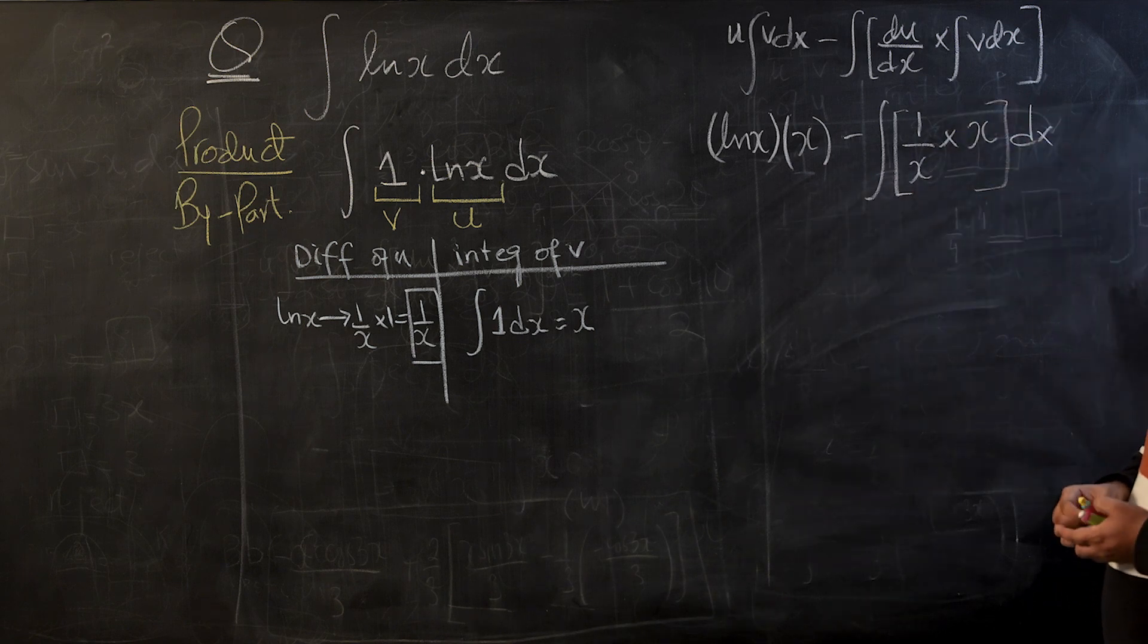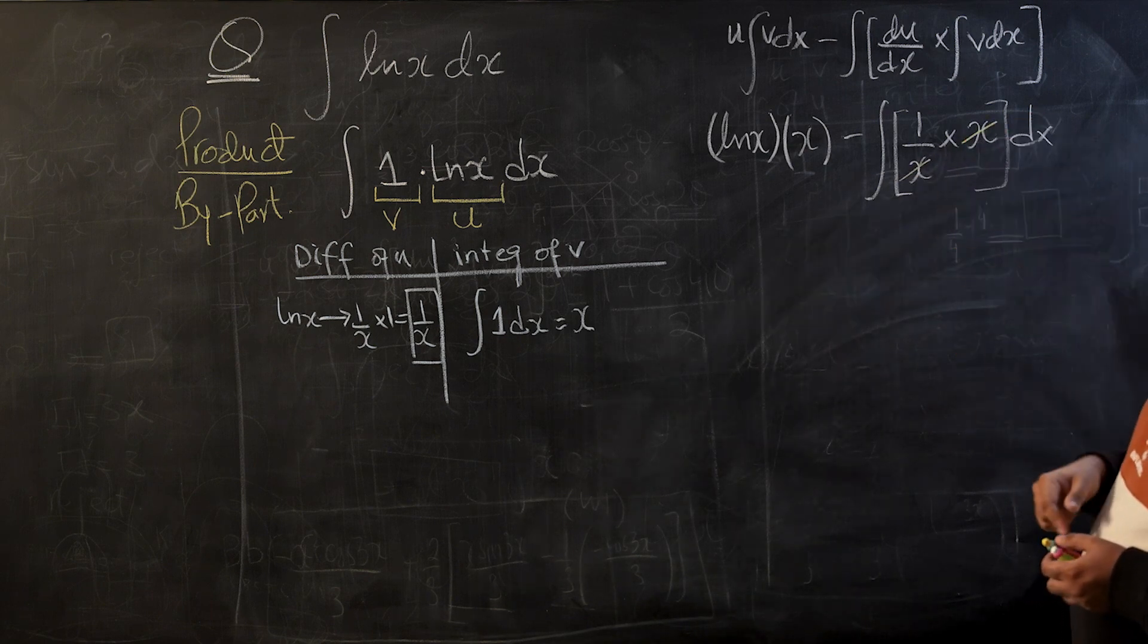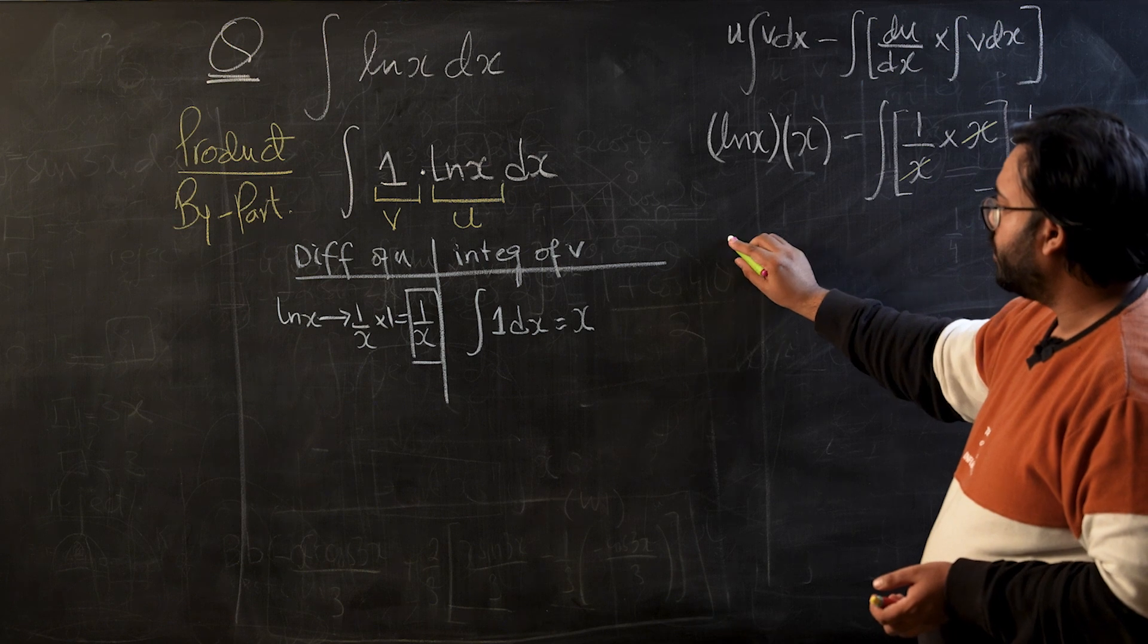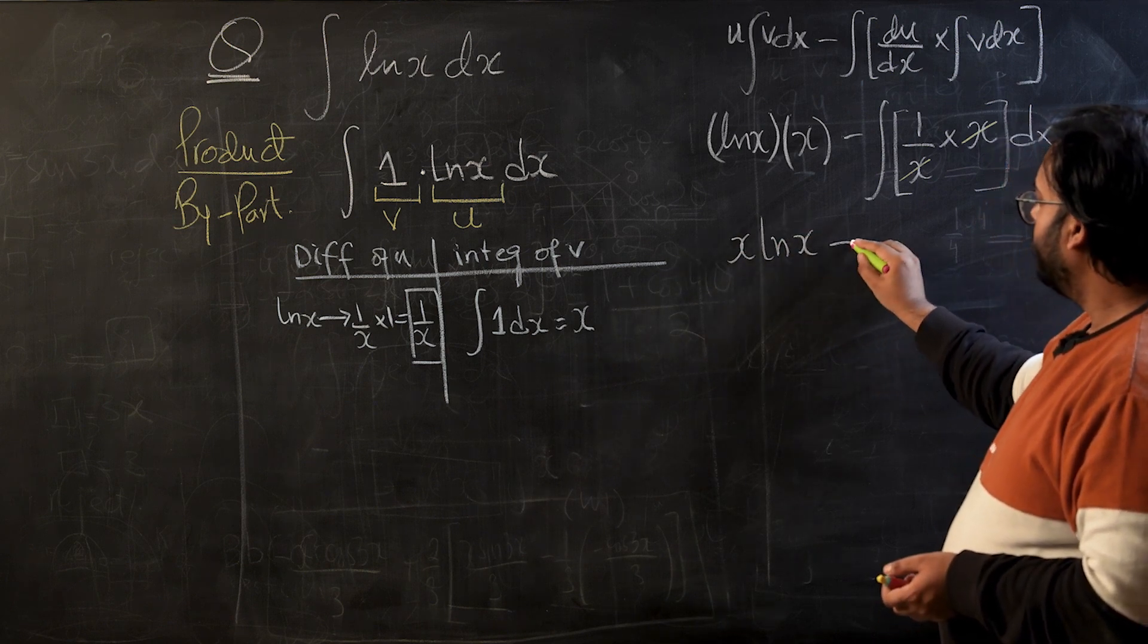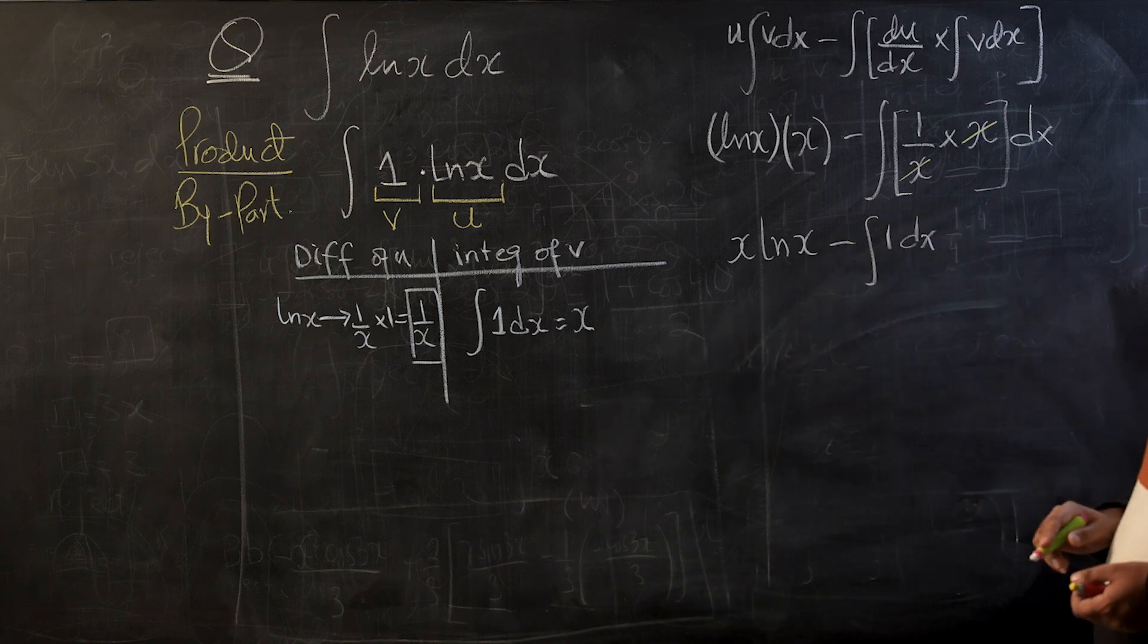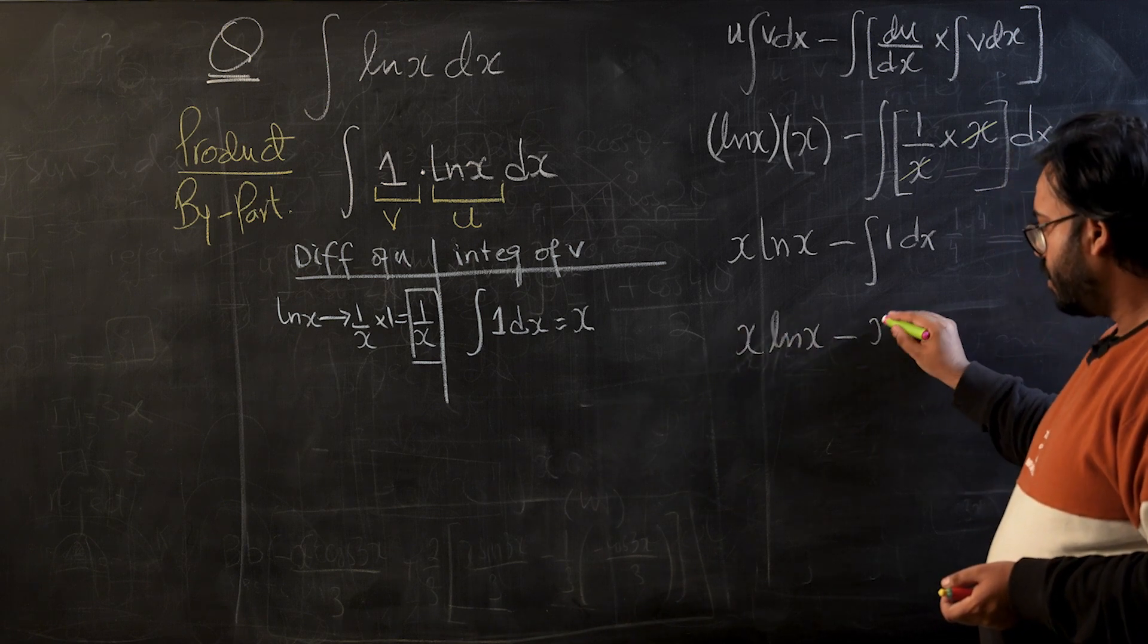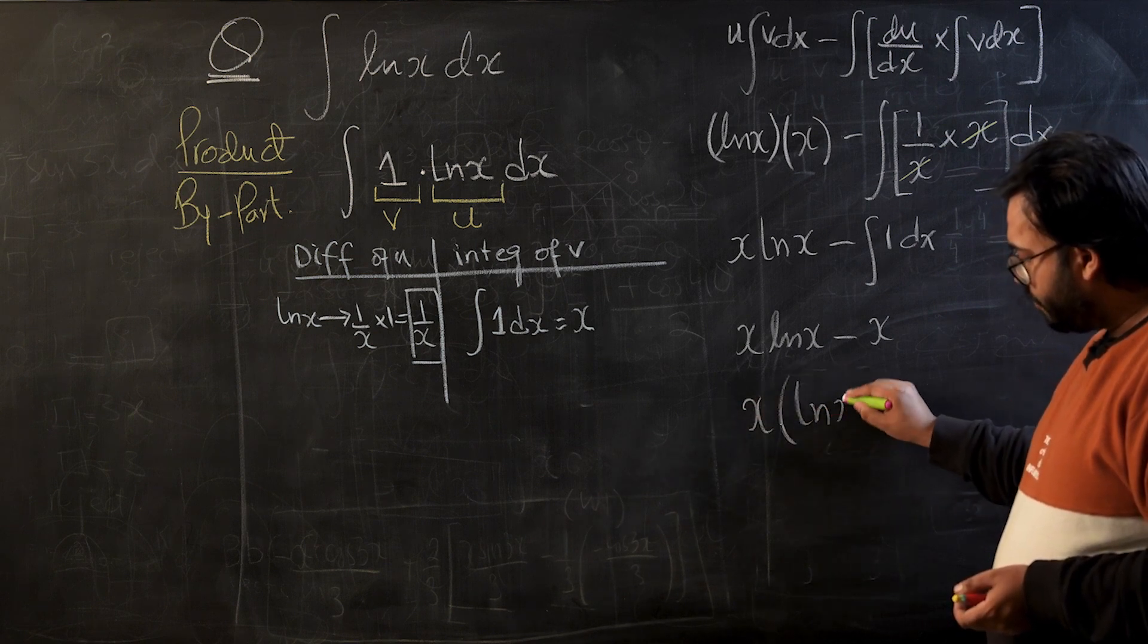Once we're done with this, we're going to simplify a little bit. Inside the bracket, both the x terms are going to cancel out with each other. We're going to be left with 1 in the integral. So the next term we're going to look at is x log x minus integral of 1. We've already seen that integral of 1 is x, so we will write x log x minus x. You can take x common. This is our final integral.